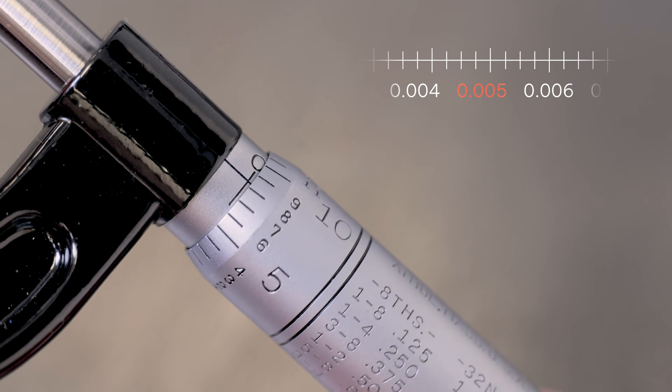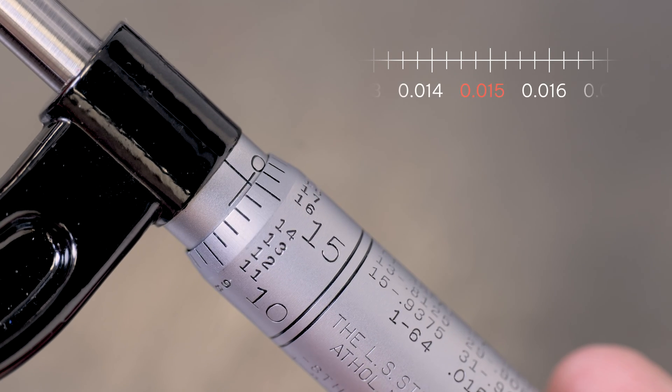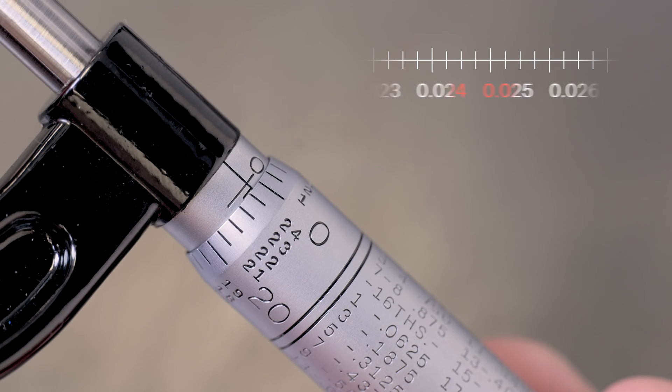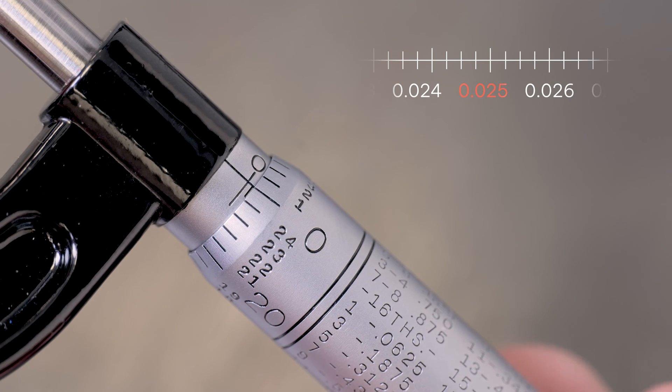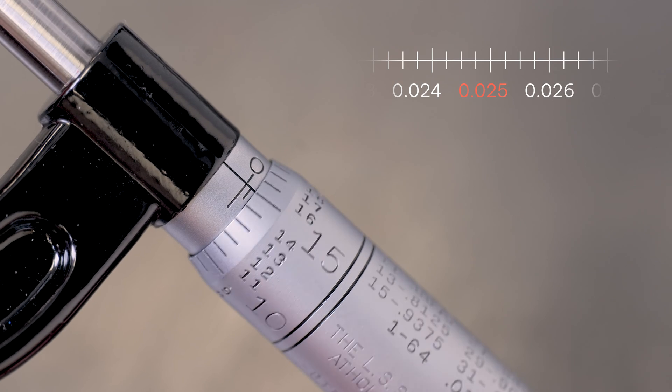I also have larger increments for every five thousandths. So that would be 10, 15, 20, all the way around to 24, and the next would be 25. And I see the first mark emerging on the stationary side of the micrometer. That tells me that that would be 25 thousandths.